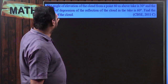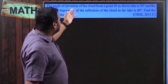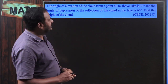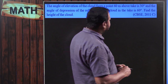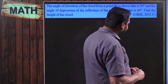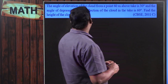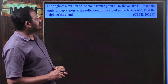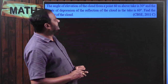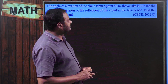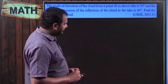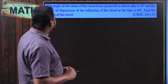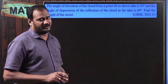The angle of elevation of the cloud from a point 60 meters above the lake is 30 degrees, and the angle of depression of the reflection of the cloud in the lake is 60 degrees. Find the height of the cloud.